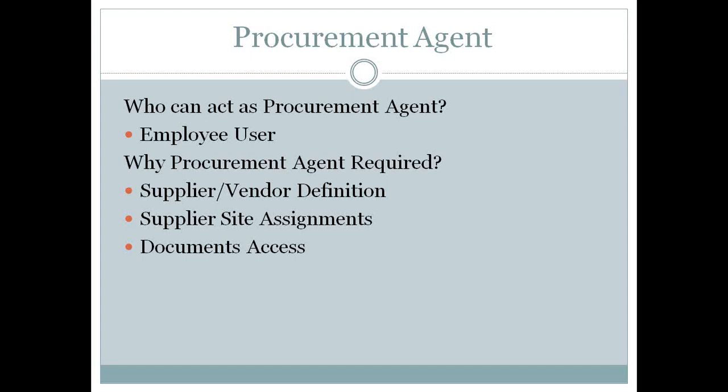If the same agent wants to assign the same site to multiple business units, they must be created as a procurement agent for those other business units as well. The procurement agent can assign supplier sites only to the business units they are associated with — that's how control is enforced. In EBS, there is no such control mechanism; for however many operating units you have access to, you can assign to any of them.